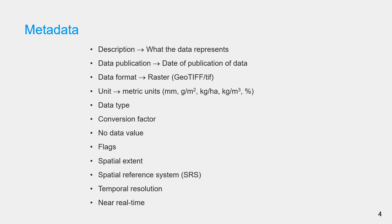The description will tell you what the data represent. All the WAPOR datasets are rasters provided in GeoTIFF format. The units are different for water, biomass, and water productivity, so make sure you know the unit when you do calculations or conversions to other units.